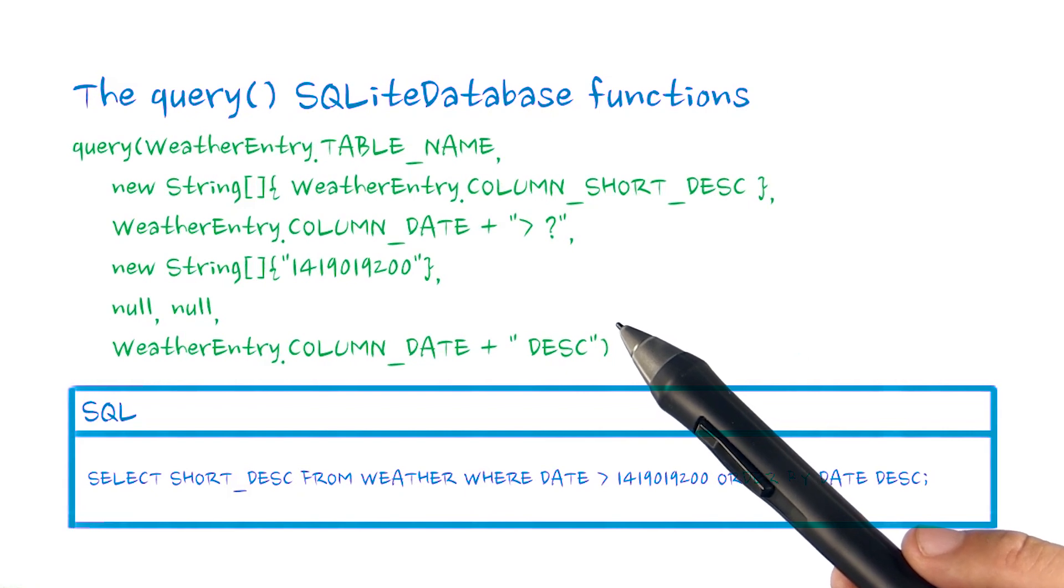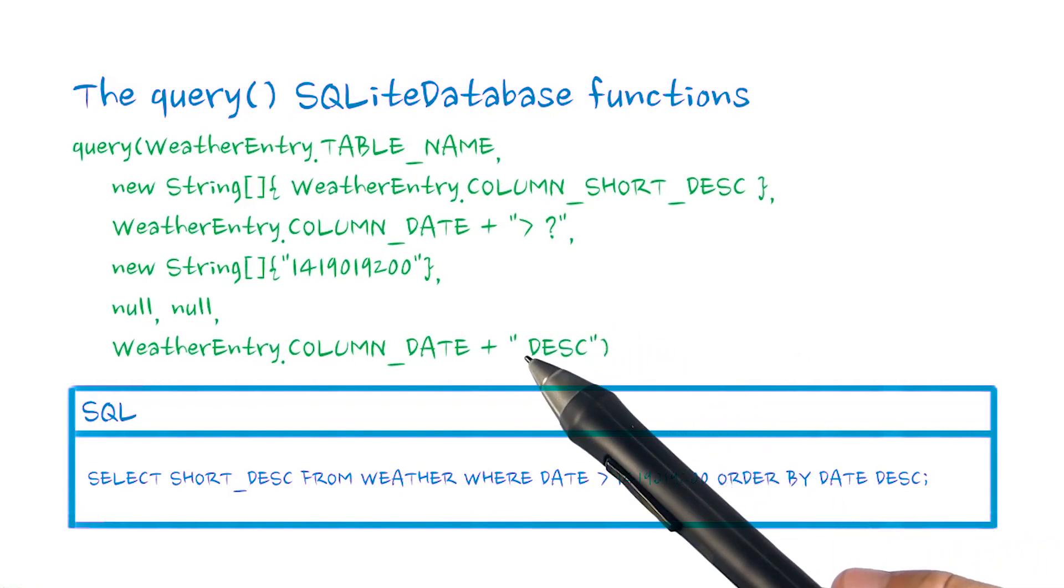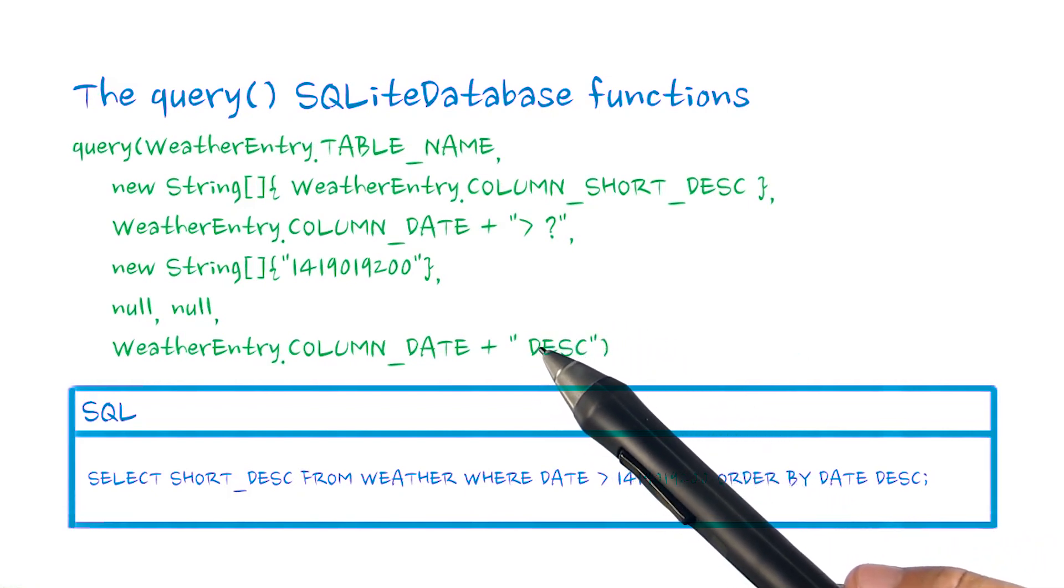The last parameter, as you would expect, affects the order by clause of our query, causing it to sort our result in descending order by date.